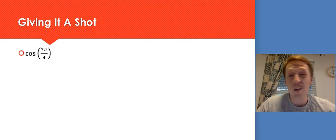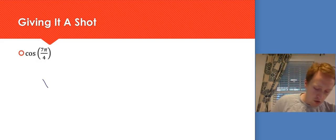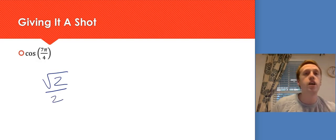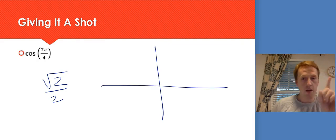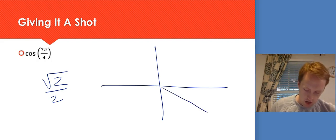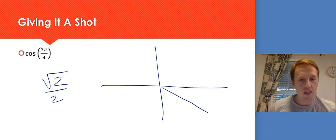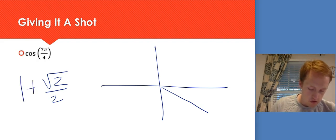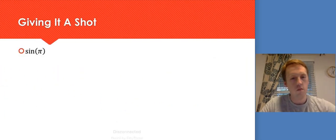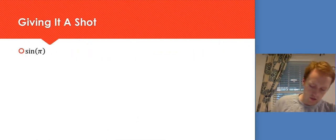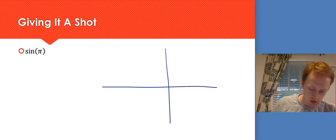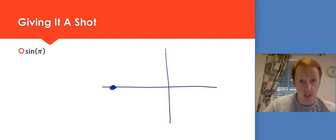Cosine of 7π/4. For the over-4s, cosine and sine are always √2/2 — it's paired with itself. I just need to figure out if it's positive or negative. 7/4 is bigger than 1 and bigger than 1 and 1/2, so it's in quadrant 4. Since I'm to the right of the y-axis, the x value is positive — so cosine is positive √2/2. Next: sine of π. Pi is one of the axis values — it's right here on the left. Sine is the y value. Did I go up or down from the x-axis at all? No. So the answer is 0.